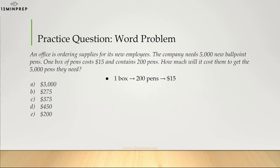First, we know the cost of a single box of 200 pens is $15. If we figure out how many boxes are needed to get 5,000 pens, we can calculate the total cost. Divide 5,000 by 200. Canceling out the zeros, this is 50 over 2, which equals 25 boxes. Then multiply by the cost of a single box, $15, meaning we need to solve 25 times 15. This is a simple multiplication problem, but we can make it quicker using shortcuts.